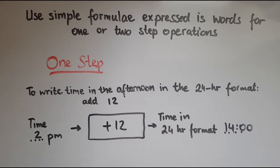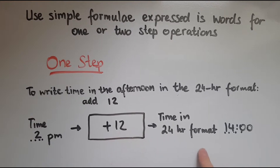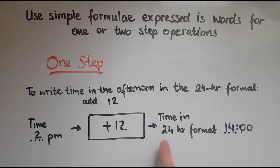And you could change this. So let's say if it's 5 p.m., add 12, it's going to give you 17:00, which is the same time in the 24-hour format. So this is one example.